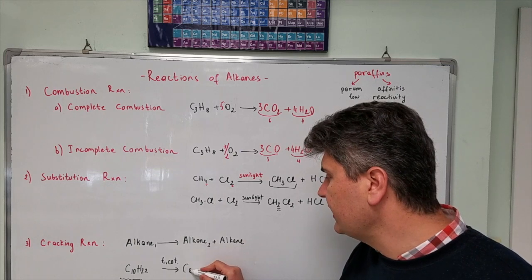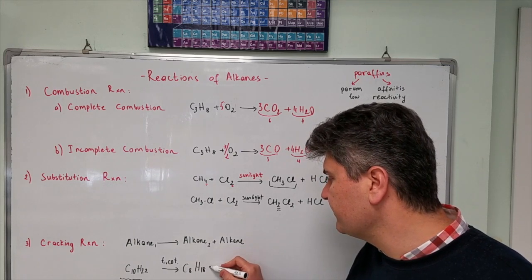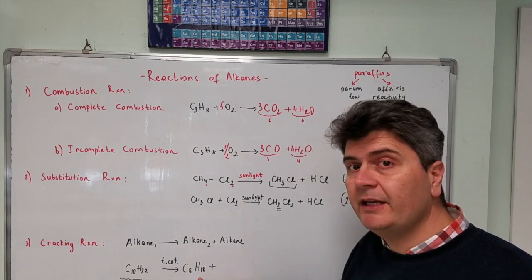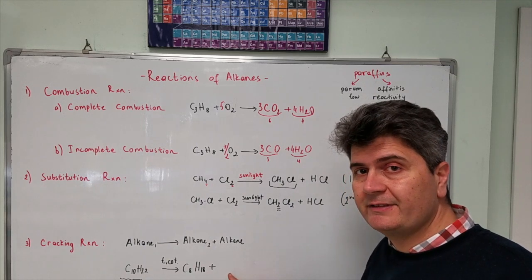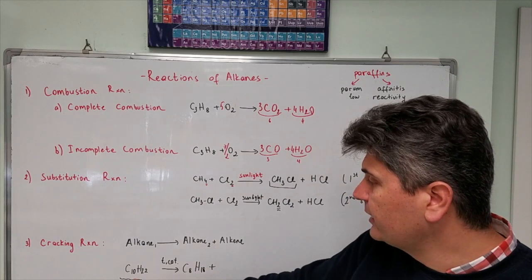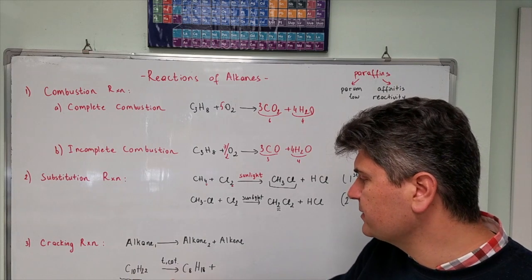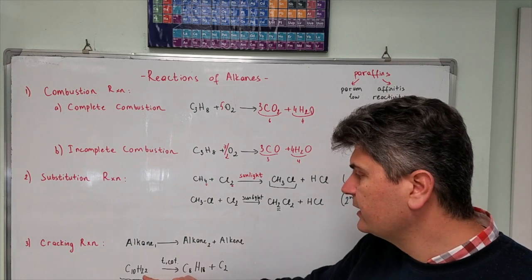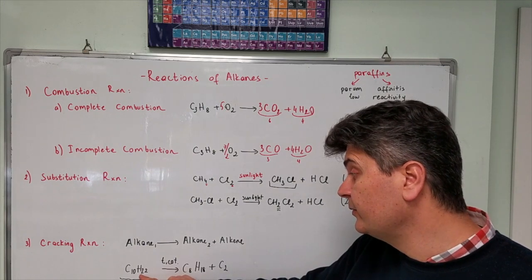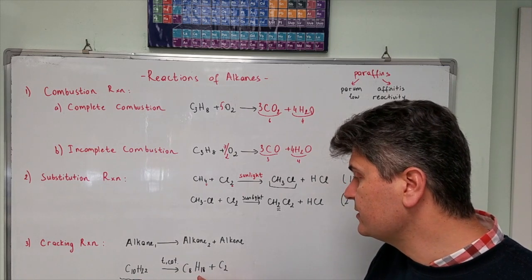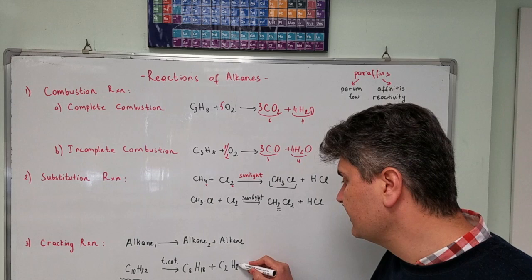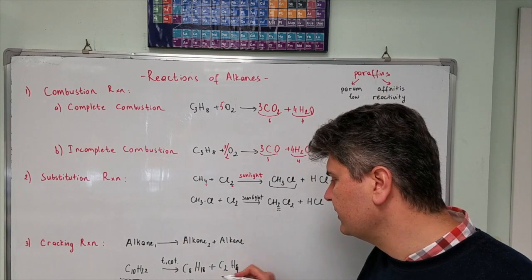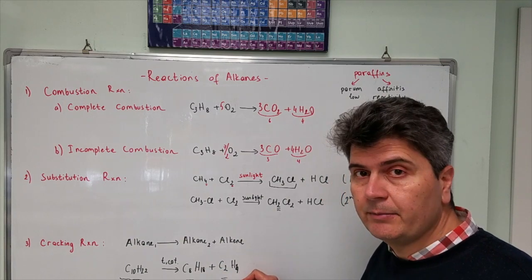One of them is C8H18. Now, if you're given the starting compound and one of the products, actually you can get the formula of the second product by checking the number of atoms. At the beginning I have 10 carbon atoms. Here I have 8. So in the second product I need to have 2 carbon atoms. At the beginning I have 22 hydrogens. Here I have 18. So 4 are left. So the second product is C2H4. This is an alkane with a single bond. This is an alkene with a double bond.